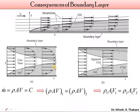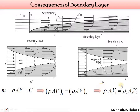Hello everyone. Now we are going to start and continue from the previous session in which we discussed the consequences of boundary layer formation. Using the continuity equation, we understood that there is loss in the mass flow rate of the fluid because of boundary layer formation. Because of boundary layer formation, the flow needs to accelerate due to reduction in the available flow area or cross-sectional area.